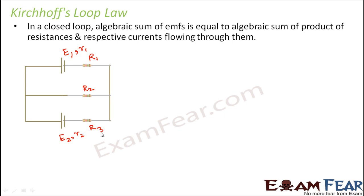Now let us try to apply Kirchhoff's Loop Law. First, let us see from where current flows. From the cell with E1, current I1 will flow into the circuit, and from the cell E2, current I2 will flow. I1 flows along its path and enters the junction; similarly I2 flows and enters the same junction. So through that common line, I1 + I2 current would be flowing.